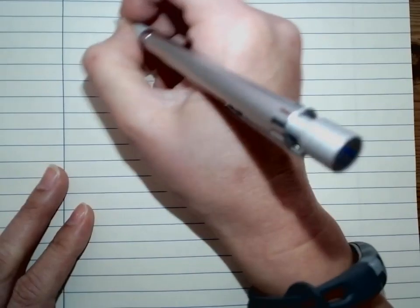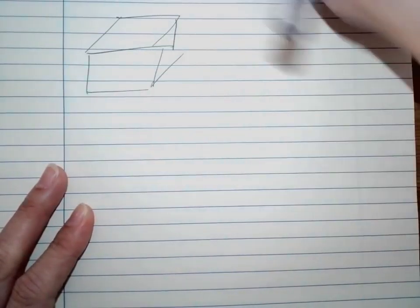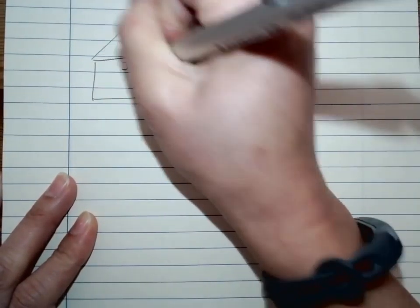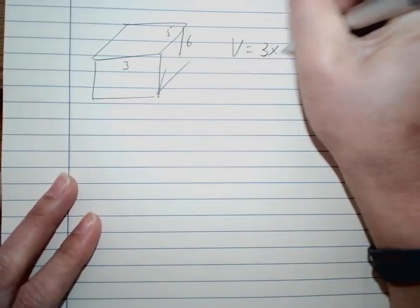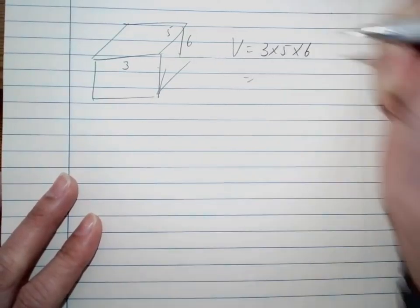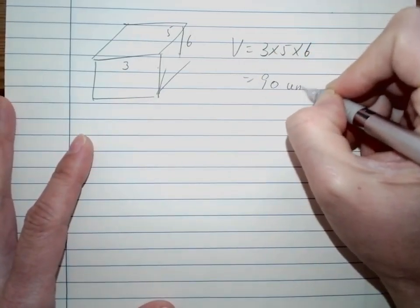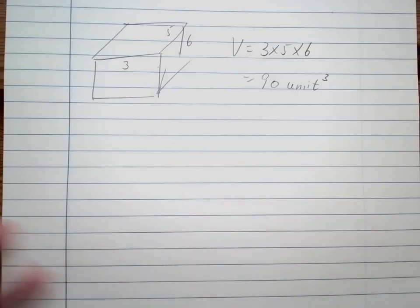Alright, let's have some examples with those. For example, the first one, the basic one. I got a shape here. We have three, five, and six. So the volume is that easy, will be three times five times six. So we have 90 units. This time it's cube because it is 3D.